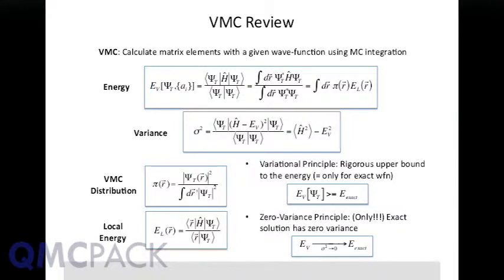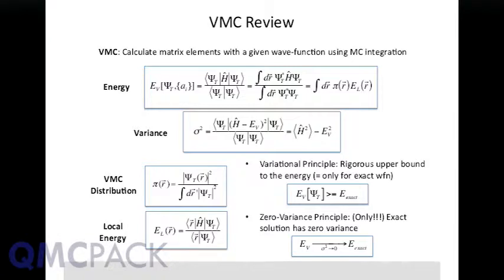A very brief review of Variational Monte Carlo. For this lecture, there is no projection — it's all at the variational level. Effectively, all we're doing is multi-dimensional integrals with Monte Carlo. For any expectation value in general, you can write the expectation value as the matrix element of the operator with respect to whatever trial wave function you want to consider. If it's unnormalized, you normalize it. You can write this as an integral over the entire configuration space, where r is a 3N-dimensional vector with the coordinates of all the electrons in the system.